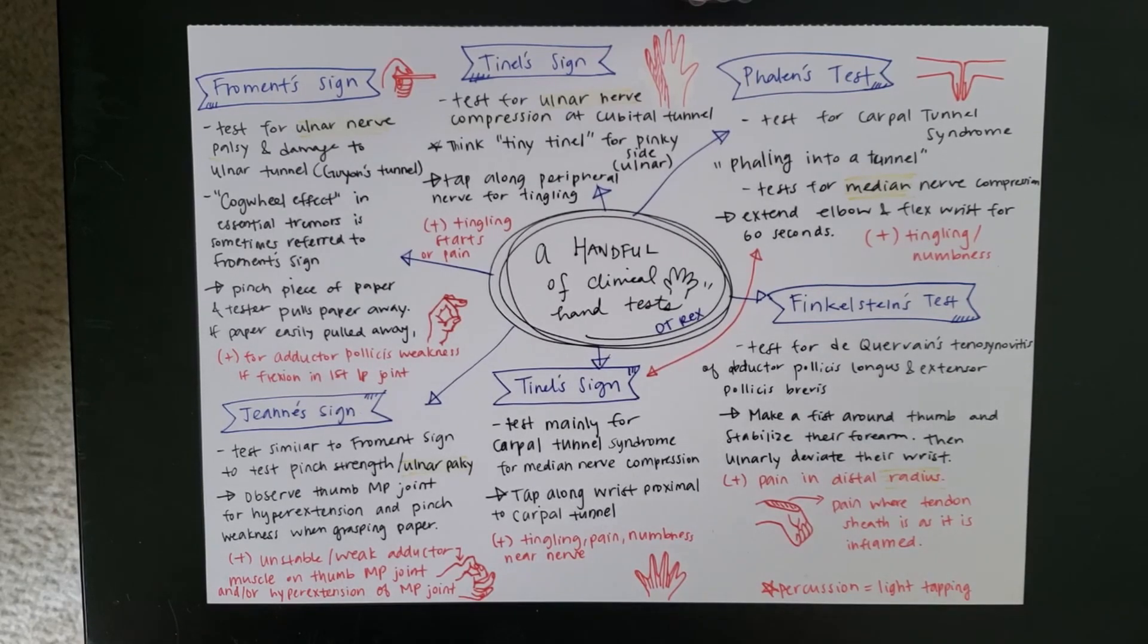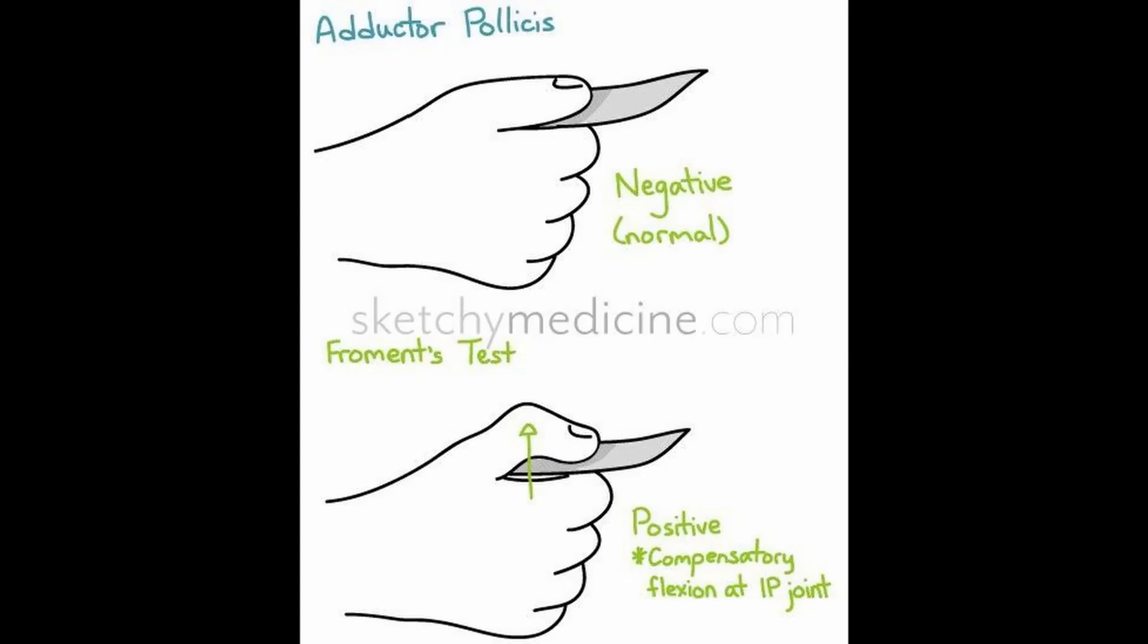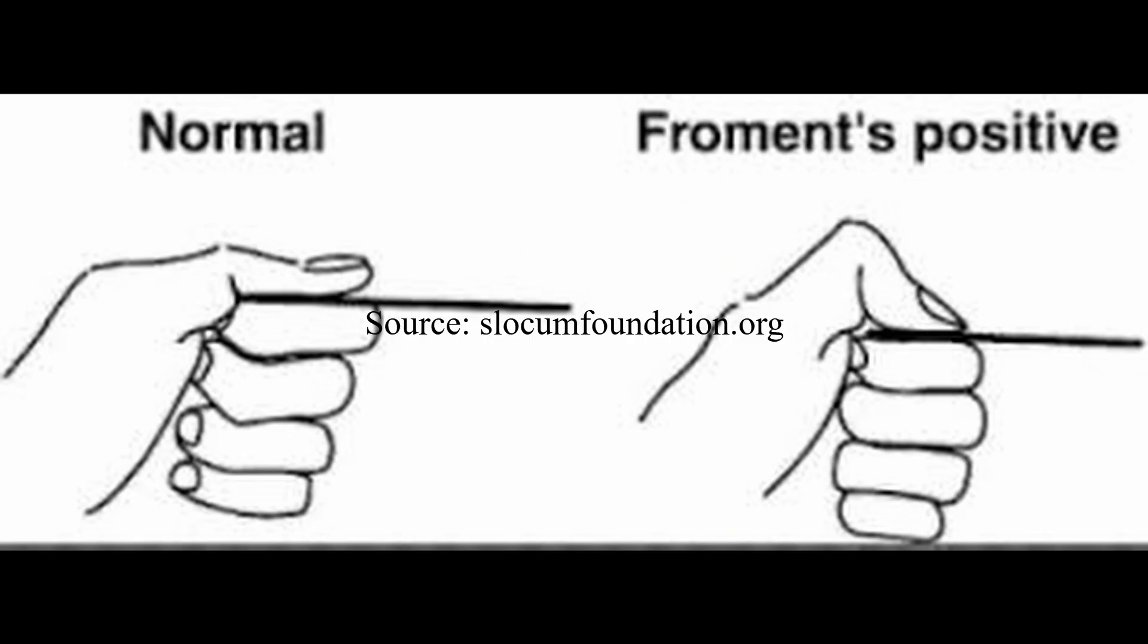To test for Froment's sign, all you have to do is give your client a piece of paper like this between their thumb and the lateral side of their index finger. And try to pull the paper away from them from the opposing side. If they have very weak grip and the paper slides out or you see that they are flexing their IP joint and their thumb in order to compensate for the muscle weakness,